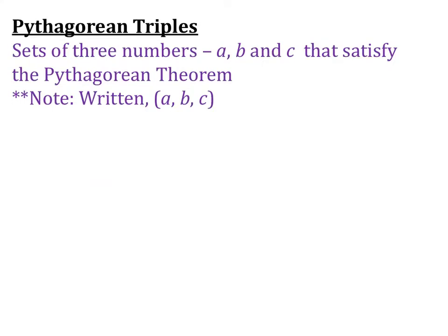With Pythagorean Theorem, we have the Pythagorean Triples. These are sets of three numbers, A, B, and C, that satisfy the Pythagorean Triple. Note, whenever we write them, we'll write them in parentheses in numerical order, smallest to largest: A, B, C.